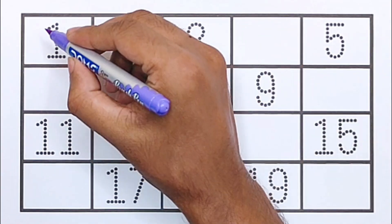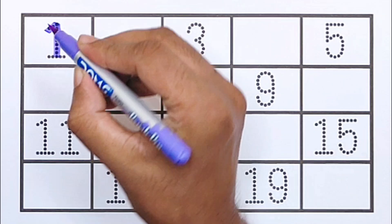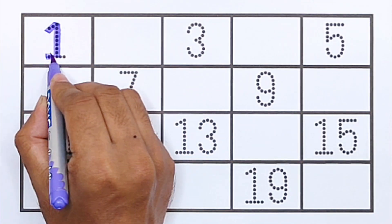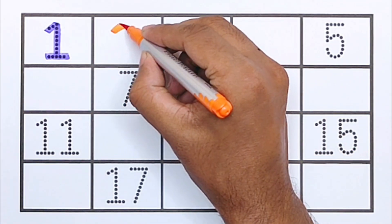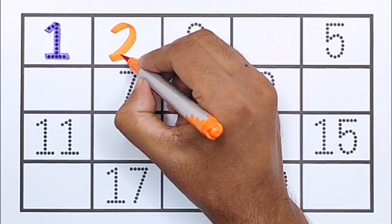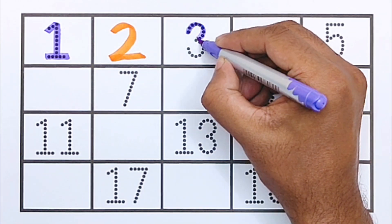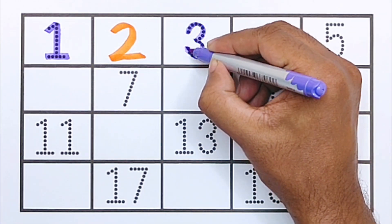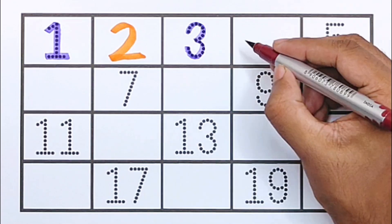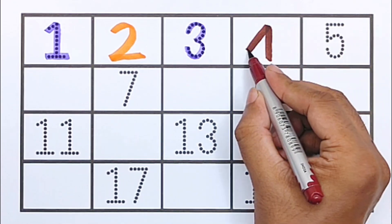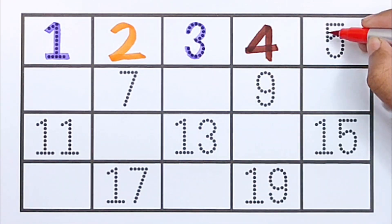Purple color. 1. Orange color. 2. Purple color. 3. Brown color. 4. Red color.